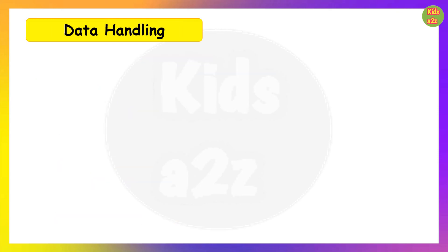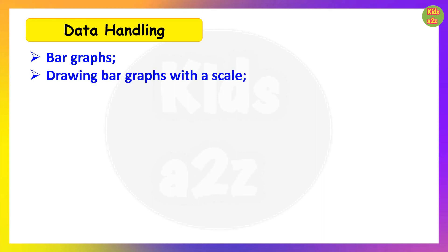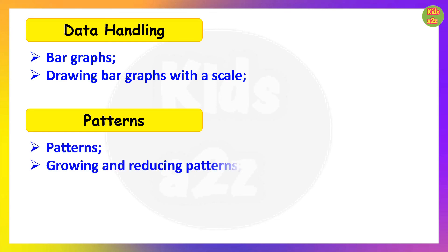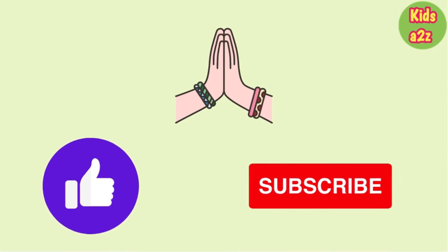Next is Data Handling. Here they will learn bar graphs — collecting raw data and representing it in a pictorial or bar graph — and drawing a bar graph with a scale. Next is Patterns, where they will learn growing and reducing patterns, recognizing growing and reducing patterns in pictures and numbers. Thanks for watching Kids A to Z.